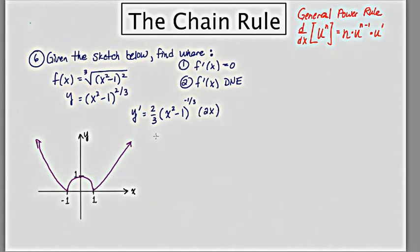We don't want to have a negative exponent in our final answer, so I'm going to rewrite this and say 4x over 3 times x squared minus 1 to the positive 1 third power. So we use the chain rule to find the derivative.